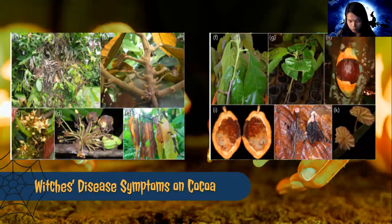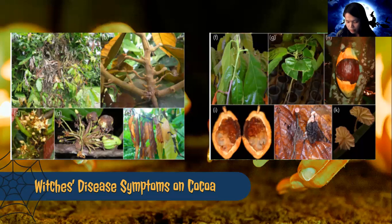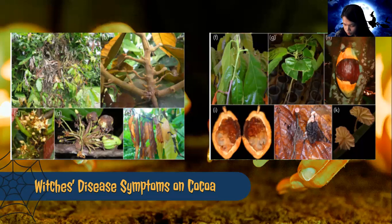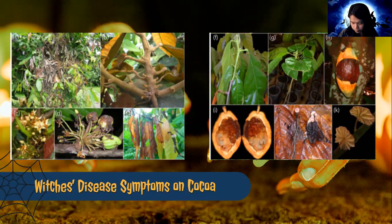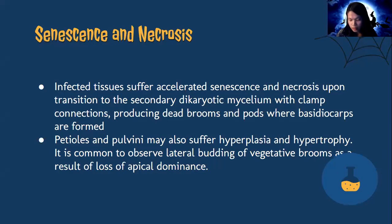Witch's Broom disease symptoms on cocoa: Figure A shows a cocoa tree with a high number of terminal and lateral brooms showing a burnt aspect. Figure C shows an infected flower cushion with lateral green brooms. Figure E shows a dead broom with necrotic leaves and basidiocarps. Figure F shows pulvinus and petiole swelling. Figure H shows a cocoa pod with Witch's Broom and diffuse necrosis. Figure I shows internal symptoms of Witch's Broom in pods, followed by basidiocarps and dead brooms in pods. Infected tissues suffer accelerated senescence and necrosis upon transition to the secondary dikaryotic mycelium with clamp connections, producing dead brooms and pods where basidiocarps are formed.